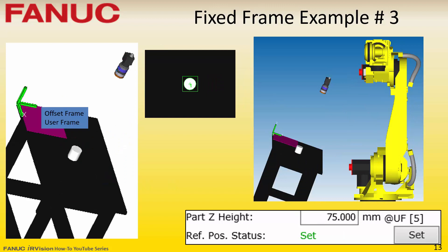In this third example, a table is located at an angle to the robot's world. The camera is located perpendicular to that table and the offset frame has been taught to the corner of the table with its orientation aligned with the table. The part Z height for this example is the same as example number one, positive 75 millimeters.